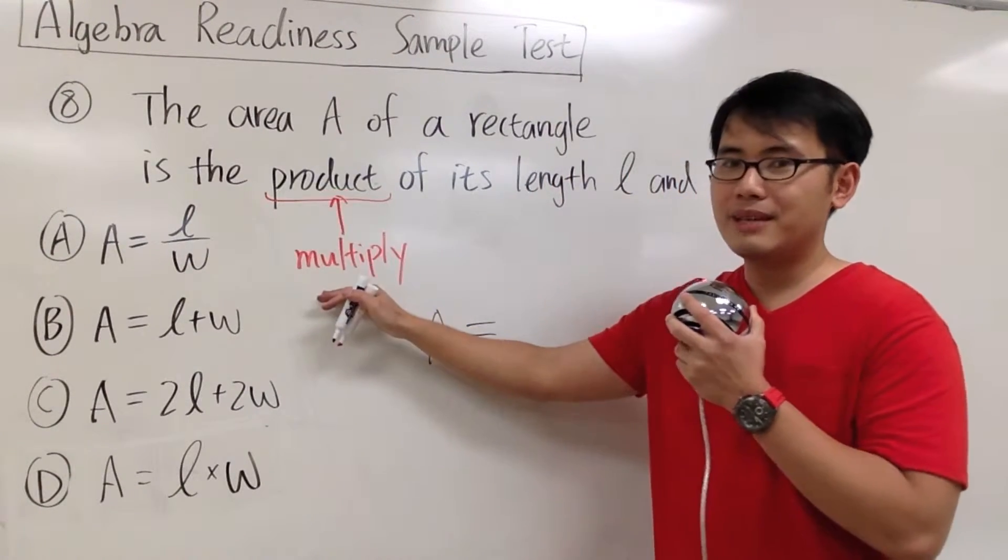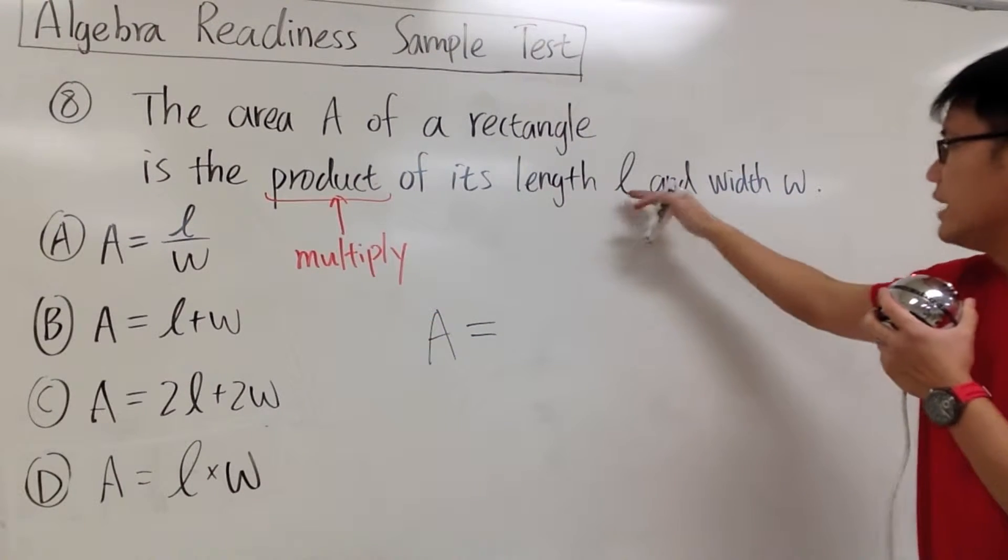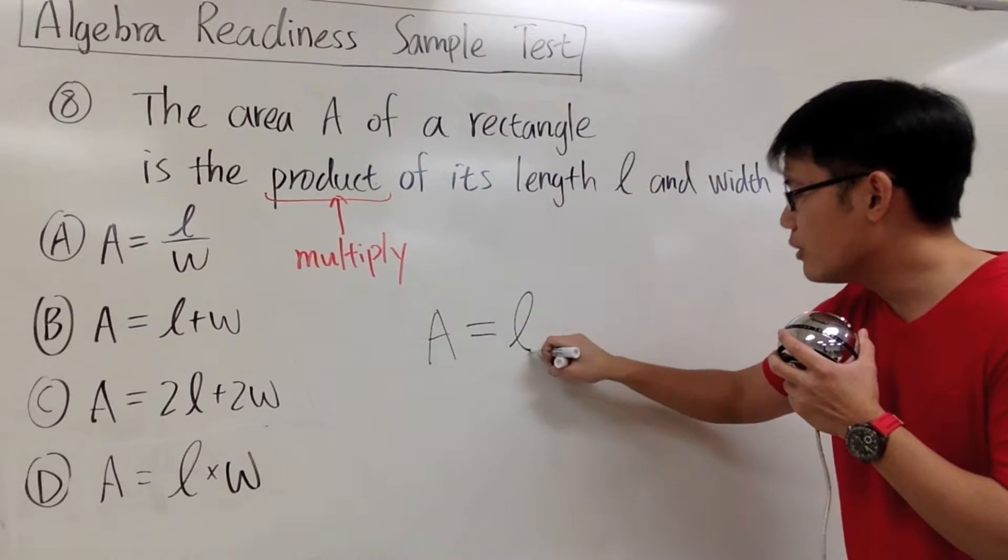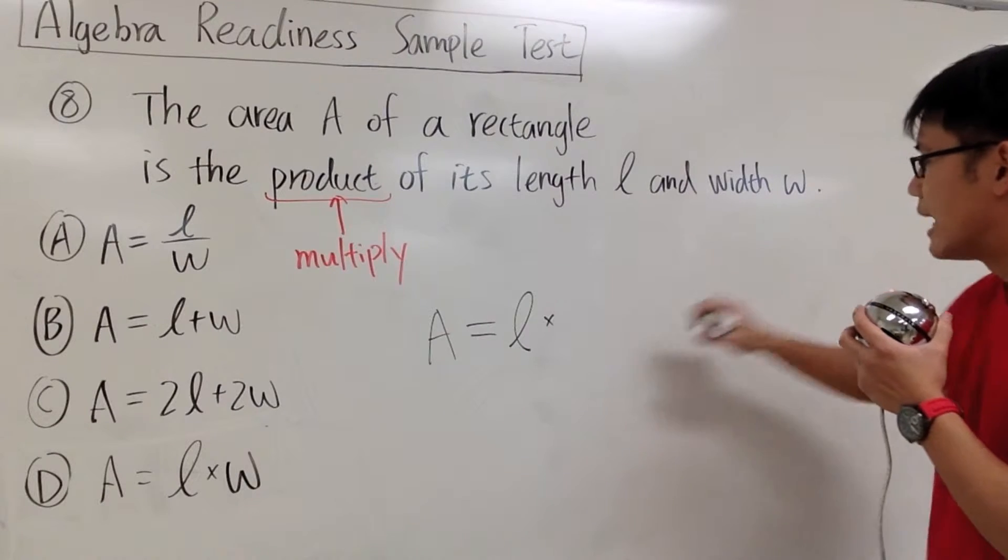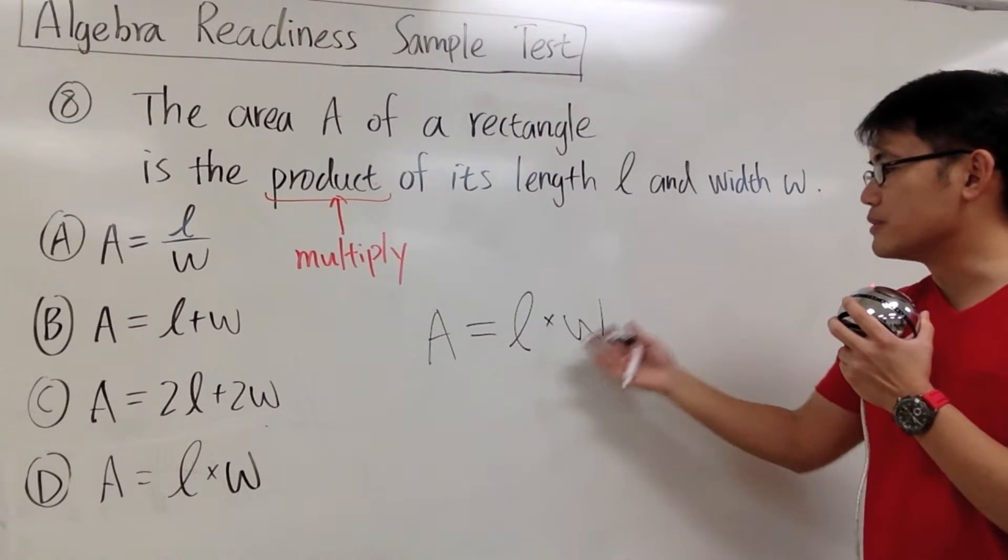Product means multiply, but multiply what? We are going to multiply the length, the L, and then the width, W, together. So we are just going to put down the L, and then we multiply with W. That's it. Area is equal to length times width.